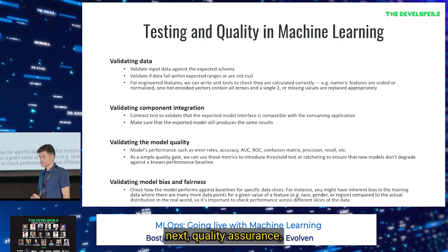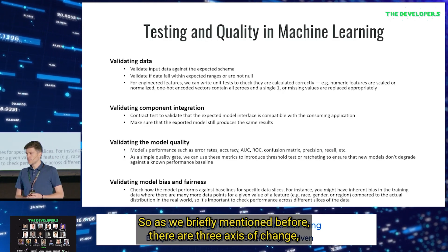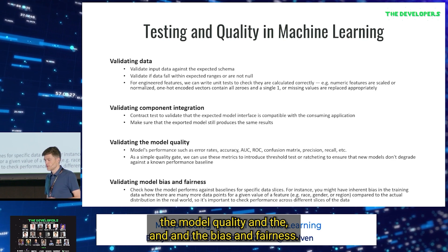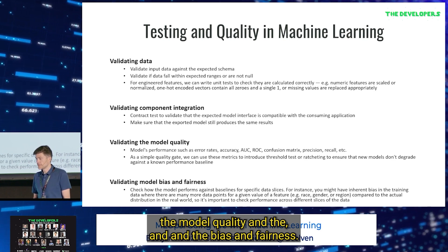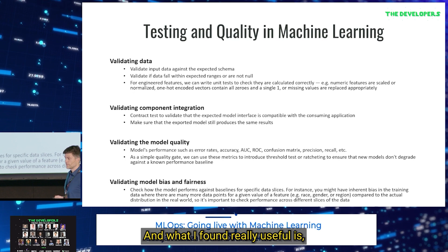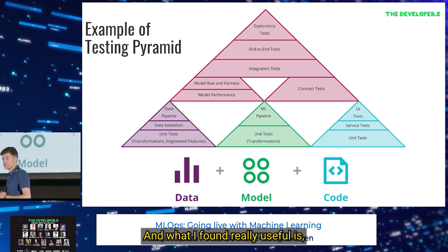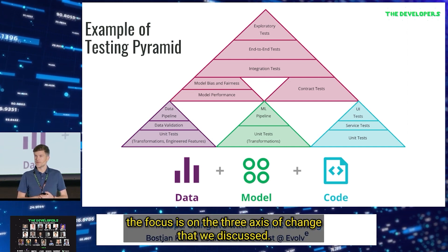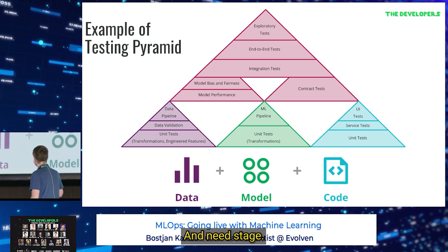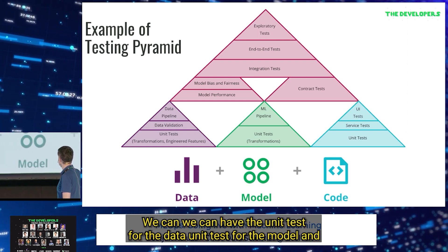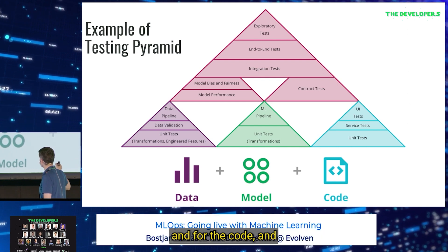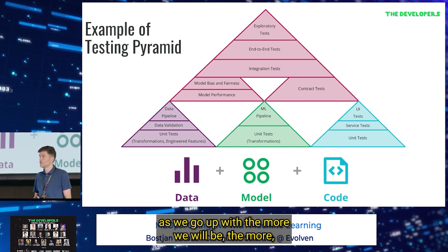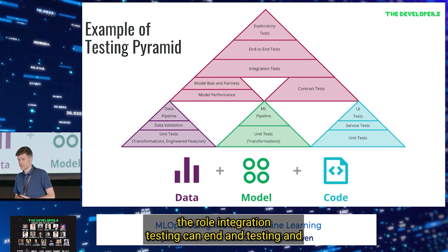Next, quality assurance. As we briefly mentioned, there are three axes of change that require us to validate the data, the component integration, the model quality, and the bias and fairness. A really useful framework is the testing pyramid focused on these three axes of change. At the base, we have unit tests for the data, unit tests for the model, and for the code. As we go up, we do more integration testing and end-to-end testing.